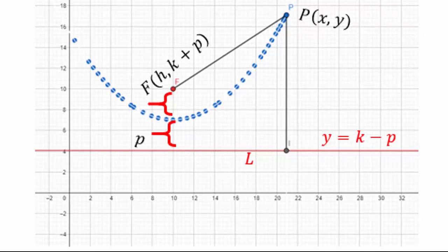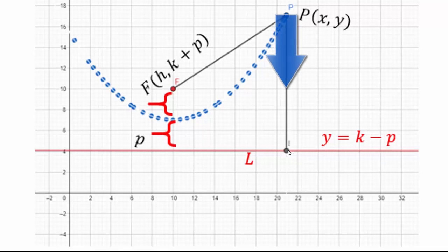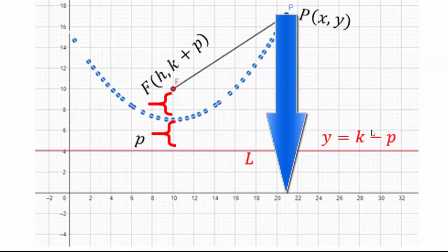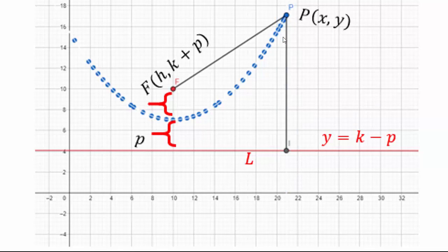How do mathematicians derive the equation of a parabola to find its vertex, focus, and directrix? If our vertex is (h, k) and p is the distance from the vertex to both the focus and the directrix, then the focus coordinates are (h, k+p) and the directrix equation is y = k−p. The distance from a point P to the directrix is y minus (k−p), and the distance from F to P is √[(x−h)² + (y−(k+p))²].